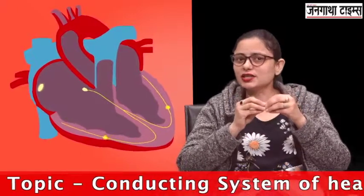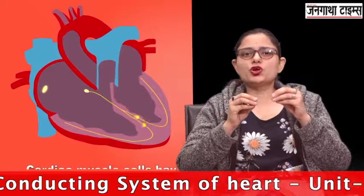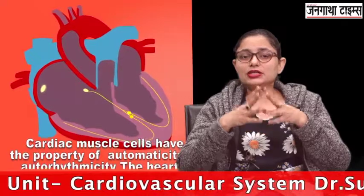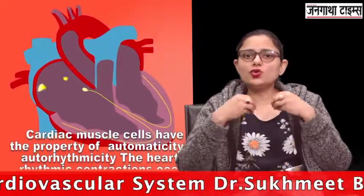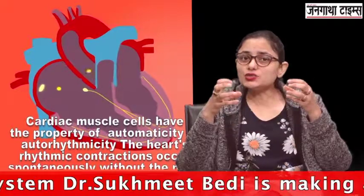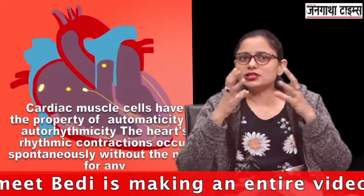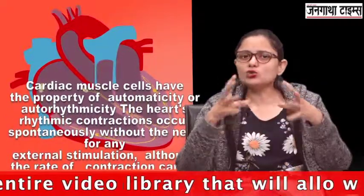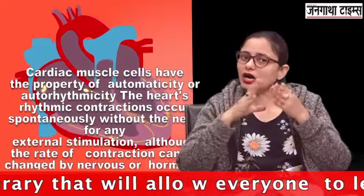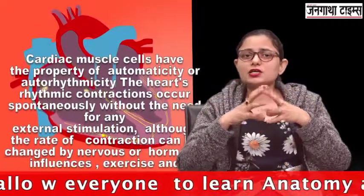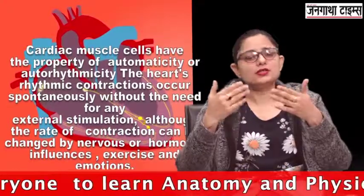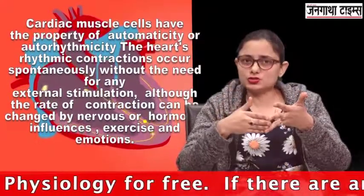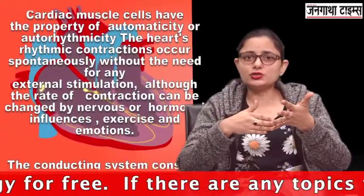There are certain specialized cardiac muscles which have the property of automaticity or auto-rhythmicity, which means they are self-excitable. They can initiate their own depolarization. The heart's rhythmic contractions are initiated by these specialized muscle cells without any external stimulus. However, the heart rate or the contractions of the heart can be altered by certain factors like exercise, emotions, hormonal control, or neural control.